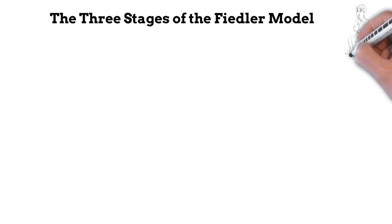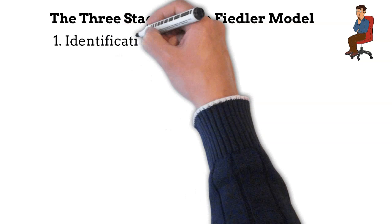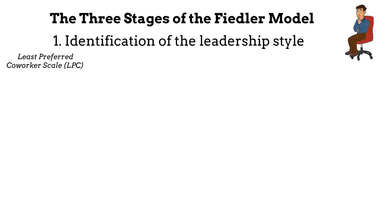A three-stage evaluation is required to use the model and understand whether there is a good match between a specific leader in a certain situation. Step 1: Identification of the Leadership Style. By using Fiedler's Least Preferred Coworker Scale, or LPC, a leader comes out as either relationship-oriented or task-oriented.